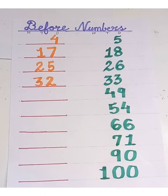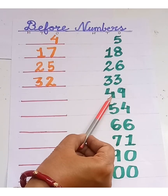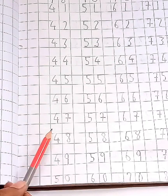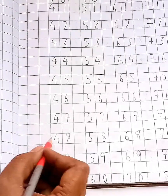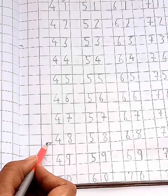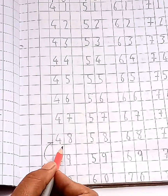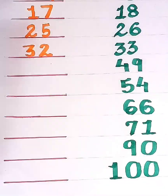Now, tell me children, which number comes before forty-nine? Let's count backward from forty-nine. Forty-nine and then forty-eight. Yes, let's write forty-eight. Forty-eight comes before forty-nine.